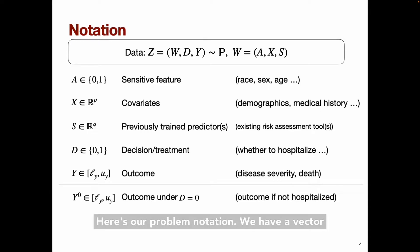Here's our problem notation. We have a vector of observed variables, Z. For convenience later on, we'll call the first three variables collectively W. A is a sensitive feature such as race, sex, age. Our methods can be naturally extended to multivalued sensitive features, but here we'll restrict to binary features for ease of exposition.